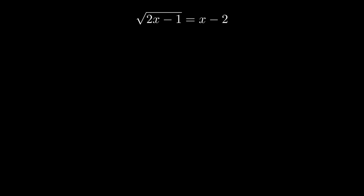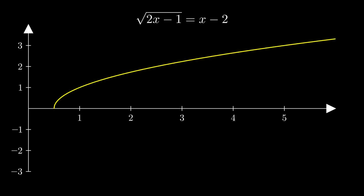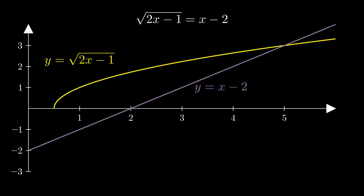Our algebraic solution at the start of the video interpreted this as the question what value of x makes this statement true? On the other hand, let's try to think about this visually. Imagine a graph of the function y equals root 2x minus 1. On the same axis, let's also draw a graph of the function y equals x minus 2.